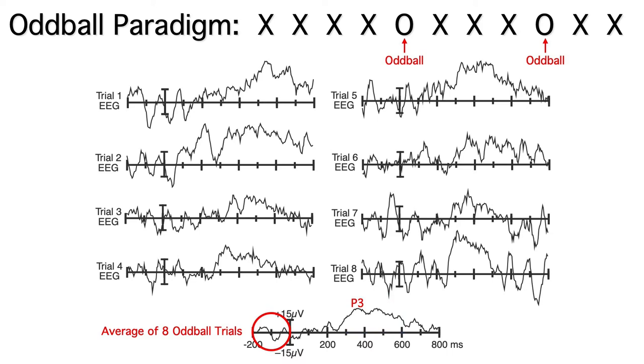Usually an ERP component is only a few microvolts, and we're looking for differences between conditions that might be less than 1 microvolt. So we usually need way more than 8 trials.